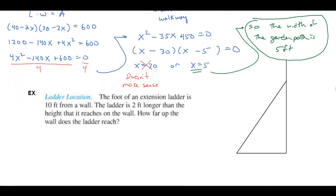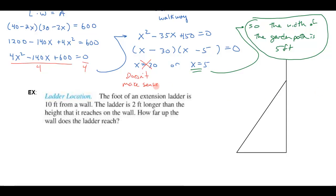Okay, let's move on to another problem here. This says the foot of an extension ladder is 10 feet from a wall. The ladder is 2 feet longer than the height that it reaches on the wall. And the question is, how far up the wall does the ladder reach? So, the very first thing I did was draw a picture. You don't have to be a great artist. I just used a simple ruler here to draw these, and that's not hard. Anybody can do that.